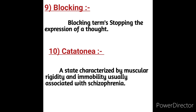Catatonia is a state characterized by muscular rigidity and immobility, usually associated with schizophrenia. Catatonia is a behavioral syndrome marked by inability to move normally. It can be associated with schizophrenia and other mental illnesses.